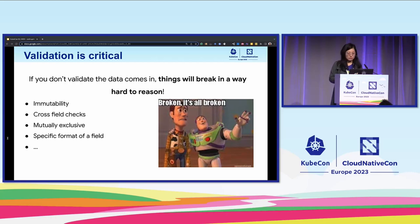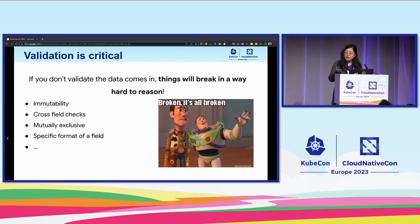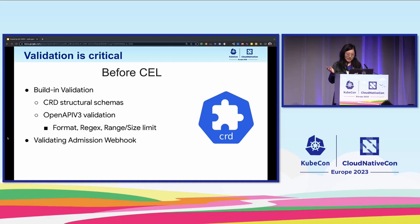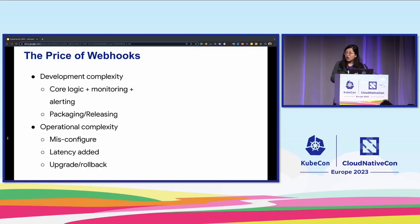Here are a couple of examples of the validations people really wanted to do with CRDs. For example, they want to enforce a field is immutable, do some cross-field checks, make sure two fields are mutually exclusive, or apply a specific format to their fields. For quite some time, validation for CRD was mainly done through structural schema and OpenAPI v3 validation. For any use cases those two couldn't support, a validating admission webhook was required, which caused a lot of pain.